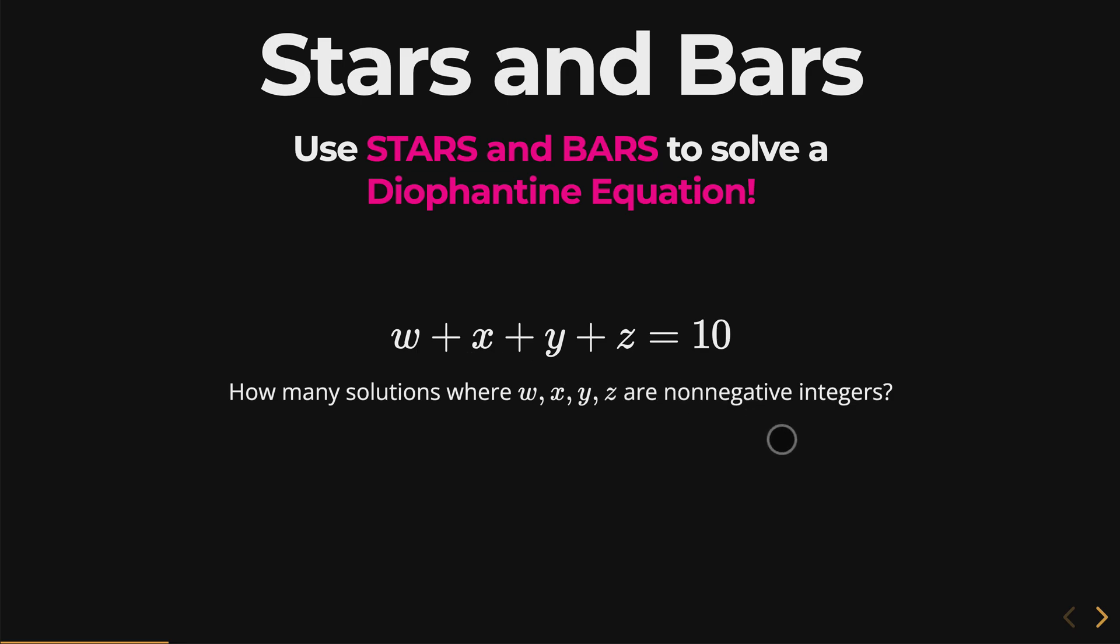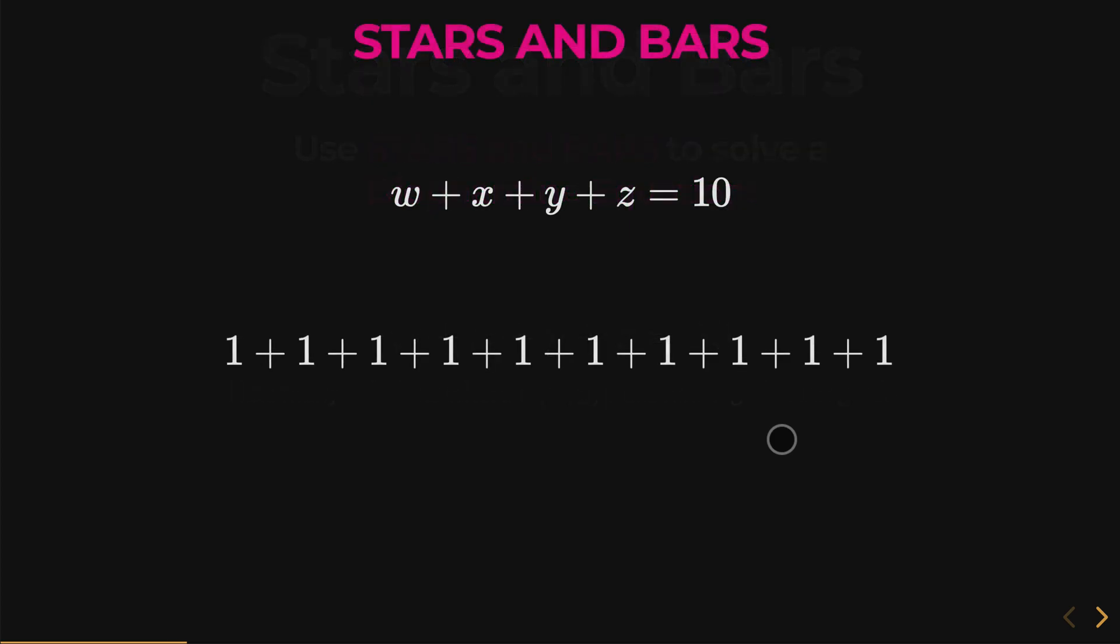It may seem a little confusing as to how we can convert this Diophantine equation because it seems like algebra, but actually we can use stars and bars to solve this using a very clever little manipulation. If you notice, ten is obviously just a bunch of ones added together, ten ones added together, as I have right here.